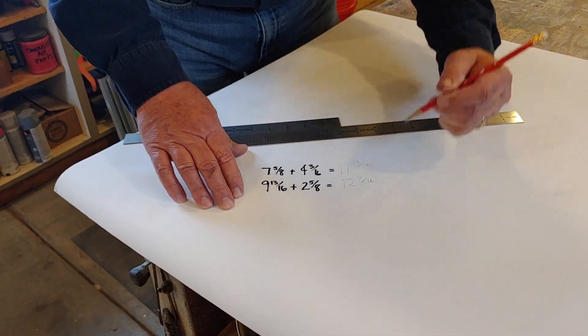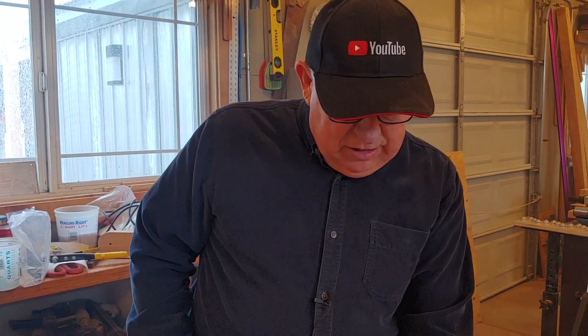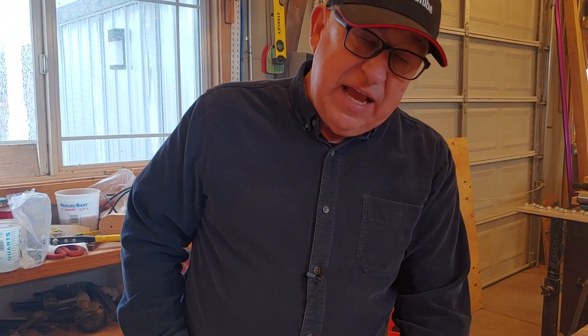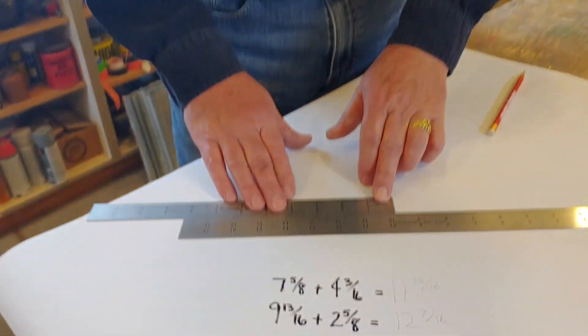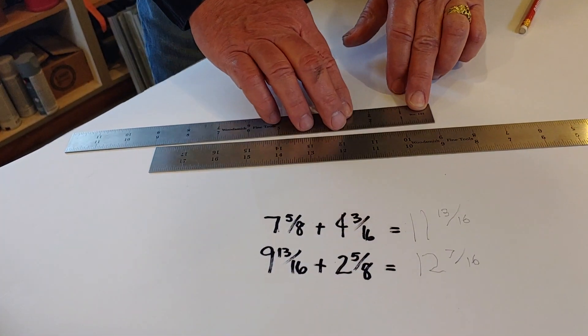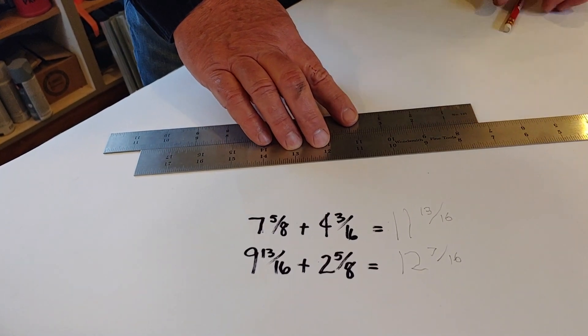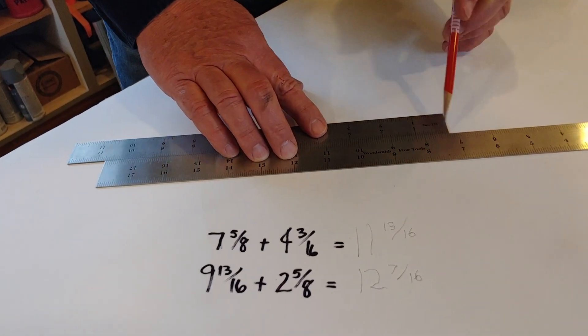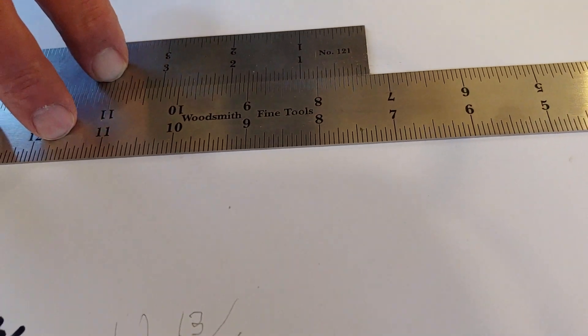Now you can do the opposite as well. If I was subtracting out 2 and 5/8ths from 9 and 13/16ths, I could do the same thing. I could just go, let's go 9 and 13/16ths and put 2 and 5/8ths on that 9 and 13/16ths right there and go backwards. And then I get my answer over here. It's pretty spiffy, isn't it?